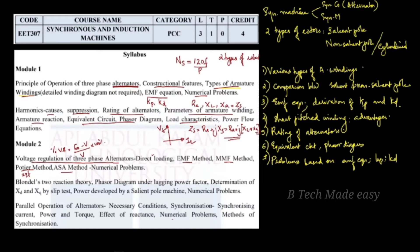The next method is called the ZPF or Potier method. If you are using this method, you can use the OCC (open circuit characteristic) and the effective armature resistance. This method uses the zero-power-factor condition to find the Potier reactance.